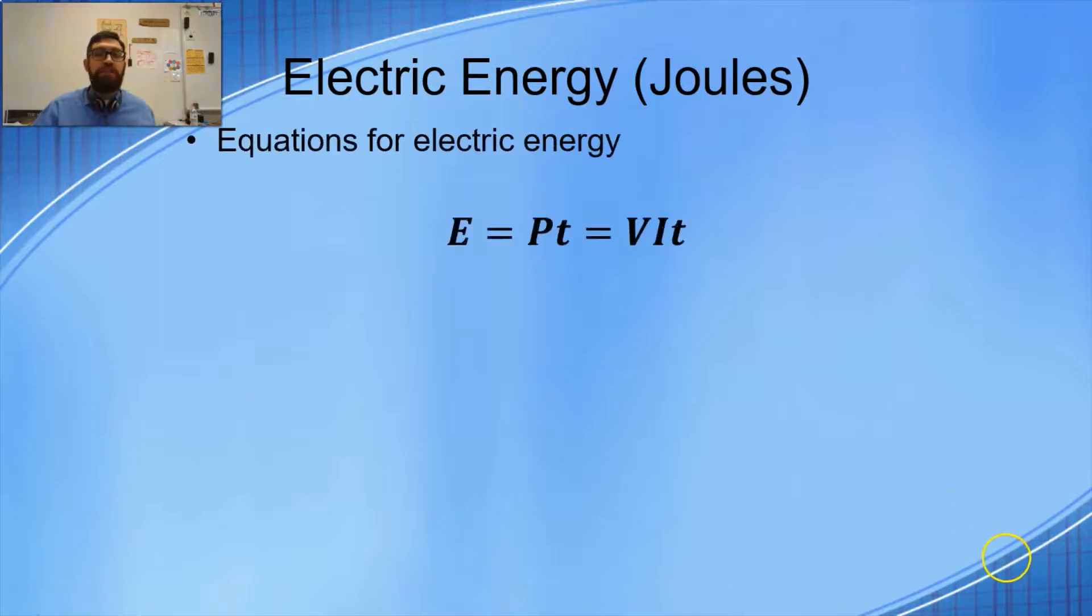These are the equations for electrical energy. Energy equals PT - this is power times time. Energy also equals voltage times current times time. It's just two different equations for energy: either E equals PT or E equals VIT. Which one you use depends on what you're given in the problem, and I'll show you that in the problems we're going to solve. So the unit for energy is joules.